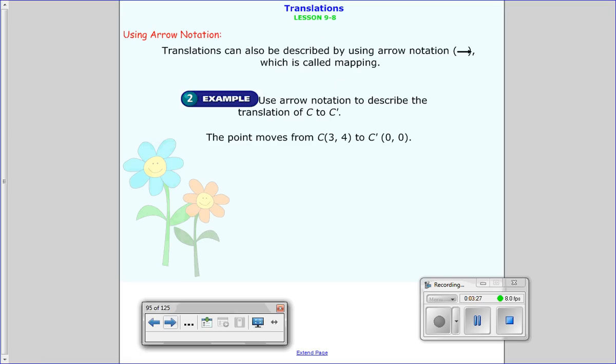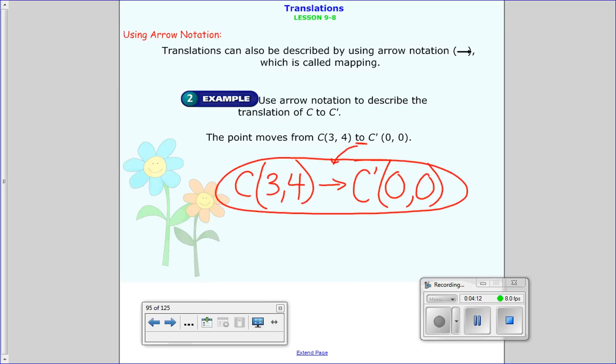So now we're going to use arrow notation. I have to tell you this first part seems a little silly because it's so obvious, but you actually use it for the next part. When we use arrow notation it's another way we map it. So you go to this point then the second point you go to is this. Use arrow notation to describe the translation of point C to the image of C. The point moves from coordinate C (3, 4) to the image C at (0, 0). All you do when they talk about transforming it to arrow notation is write those two coordinates down. Instead of writing 'to' you put in an arrow. That's all you have to do when they talk about using arrow notation, put an arrow in the middle.